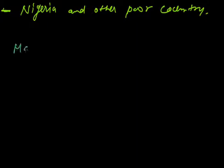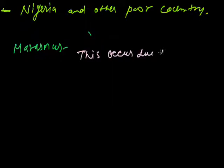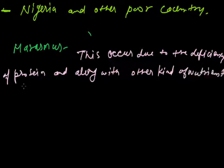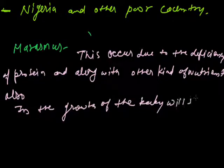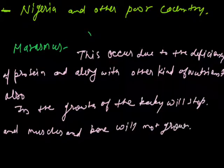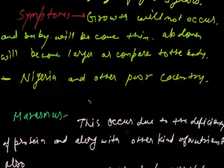Next disease is Marasmus. This occurs due to the deficiency of protein and along with other kinds of nutrients. In this, the growth of baby will stop and muscles and bones will not grow.